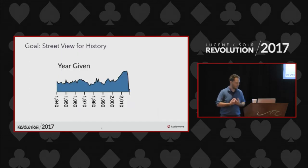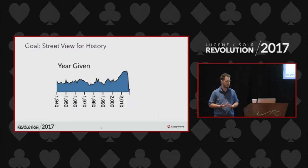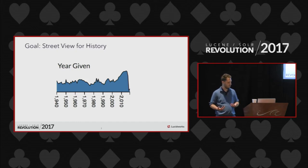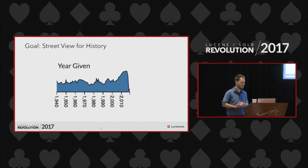What I want to imagine is something like a street view for history, where you could say: my parents were voting in some election in the past — what might they have seen on TV? Which is kind of where the first demo goes.